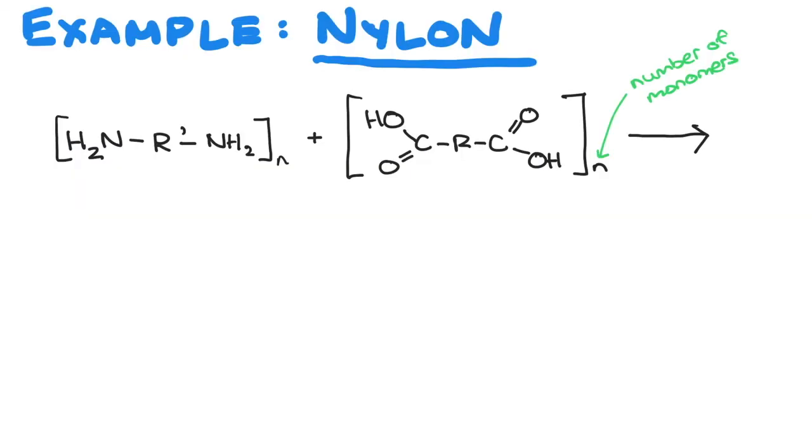Nylon is a well-known example of a condensation polymer. It's made by reacting diamines which contain the functional group amino, NH2, with compounds that contain the carboxylic acid group.